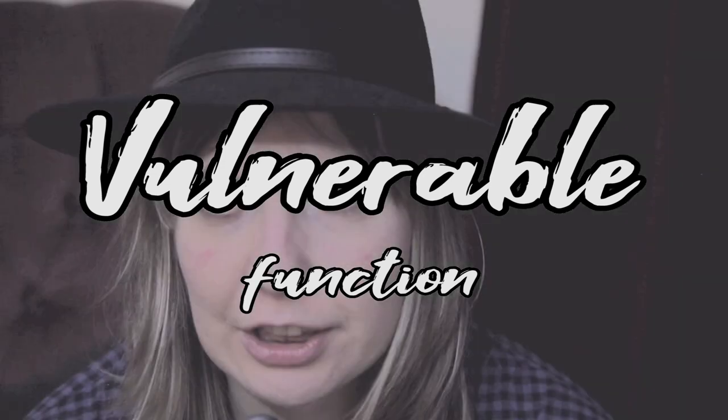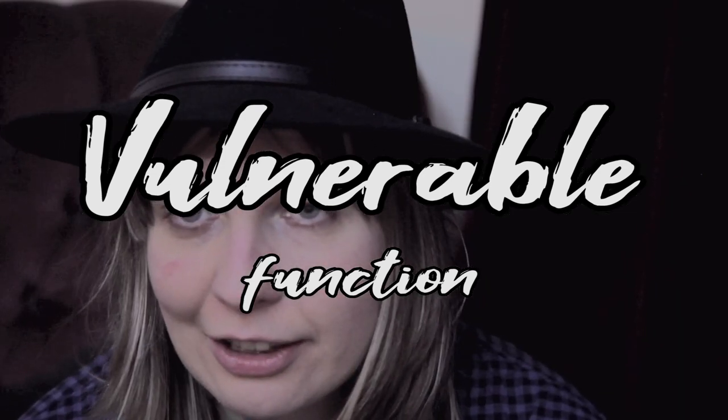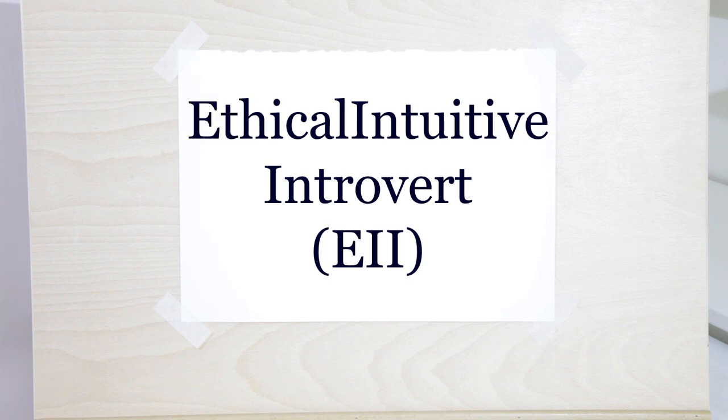The vulnerable function is the blind spot of a type. It is weak and invalid and does not inform the worldview. The information on the aspect in this position is simply incomprehensible and therefore impossible to generate. Now let's look at SE as the vulnerable aspect of the logical intuitive introvert, LII, and the ethical intuitive introvert, EII.